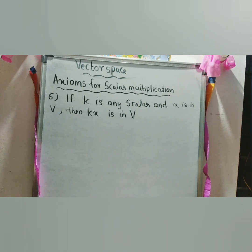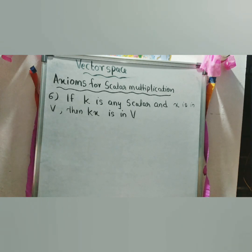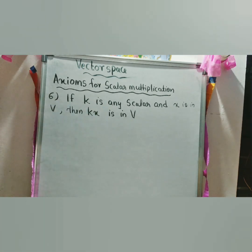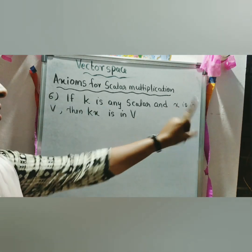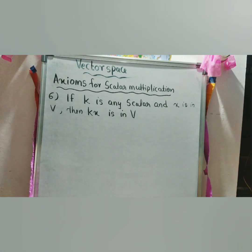Properties 6 through 10 are axioms for scalar multiplication. Sixth property: if k is any scalar and x is in V, then kx is in V. This is the closure property under scalar multiplication.